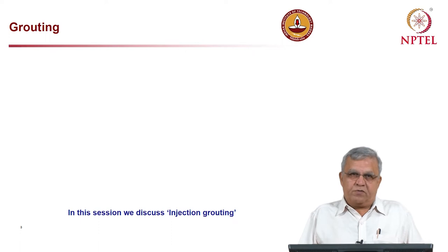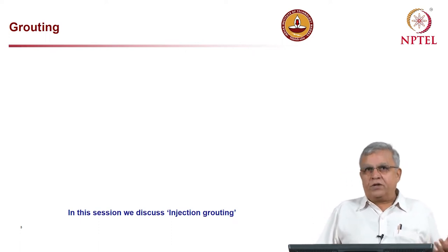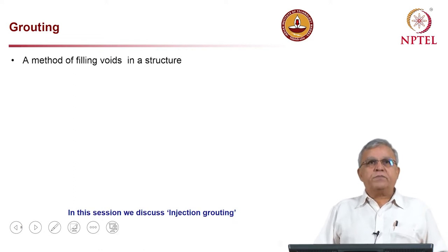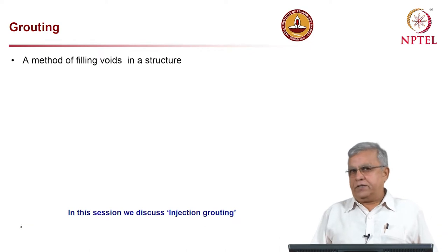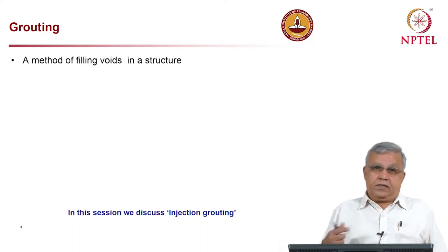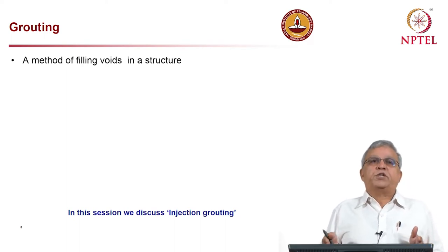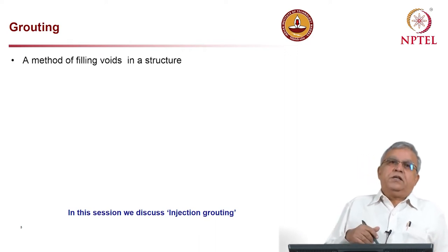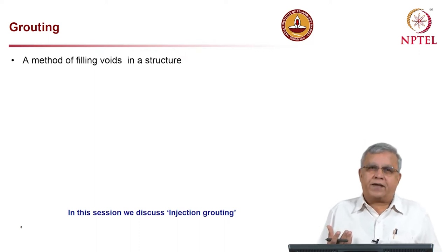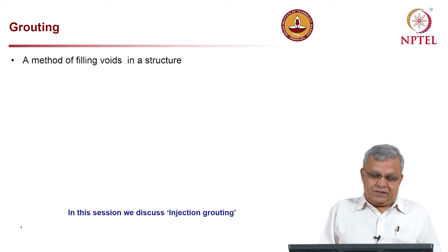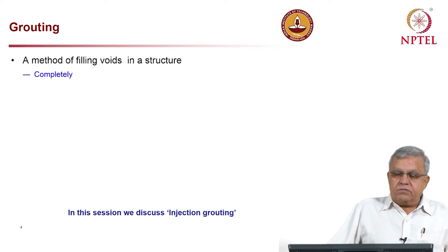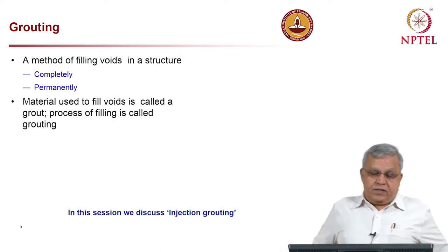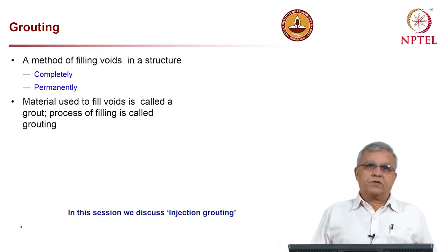Grouting is a method of filling voids in a structure. Voids cannot be avoided in any structure - there are designed voids and accidental voids. For example, an expansion joint is a deliberately designed void filled with flexible material. Accidental voids, which no engineer wants, include cracks and honeycombs. The material used to fill a void is called grout, and the process is called grouting. When filling voids, they must be filled completely and permanently.